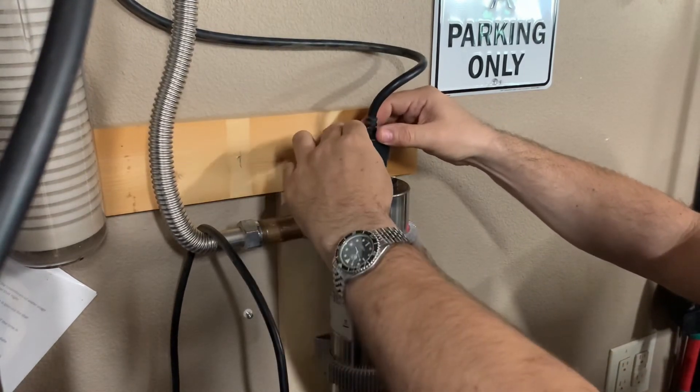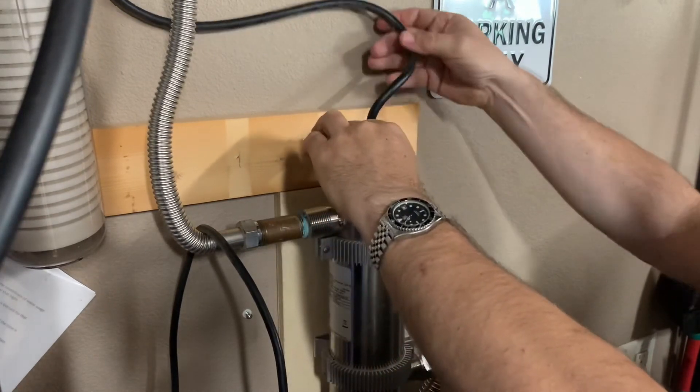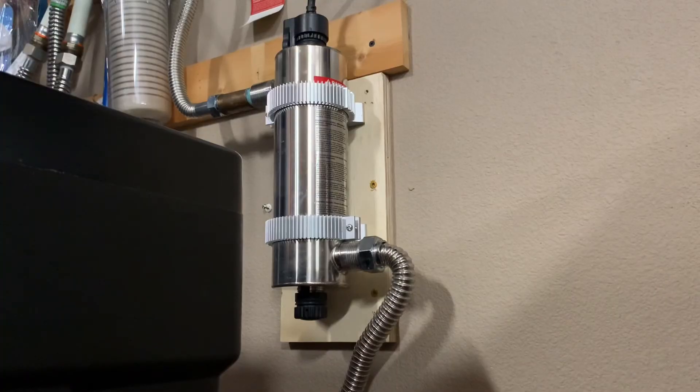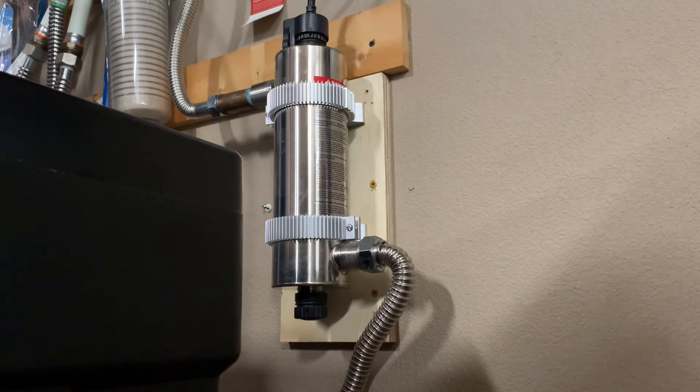Then take the plug into the unit, into the power supply for the unit. Now the bulb's back in place. So now I've got the bulb reinstalled, power reconnected, and I'm just going to check it for leaks and then I'll power it up.